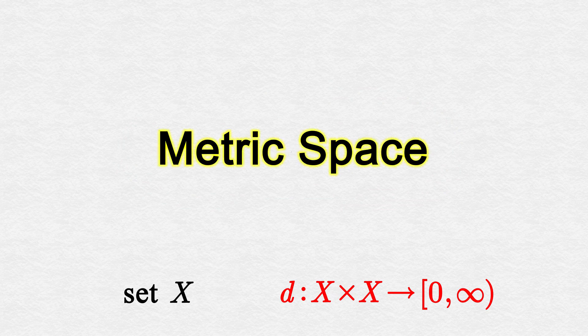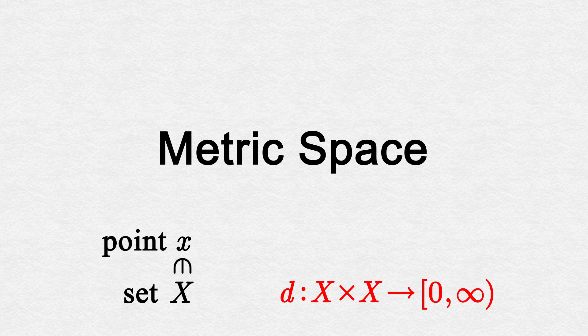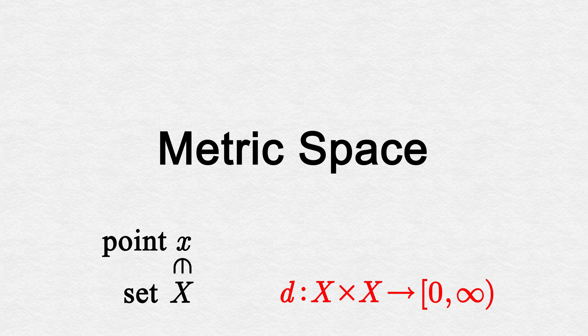The resulting object is called a metric space. In this context, we often call the elements of our set points. In this short video, we'll define metric spaces and give a few important examples we'll encounter during our study of real analysis.